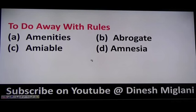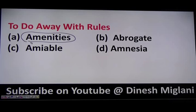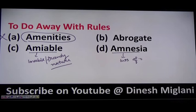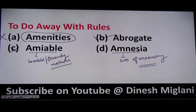The next question is: to do away with the rules. Options include amenities — which are facilities; amiable — someone who is lovable or of friendly nature; amnesia — loss of memory; and abrogate — to end or abolish something. To do away with rules means not obeying the rule, so the answer is D, abrogate.